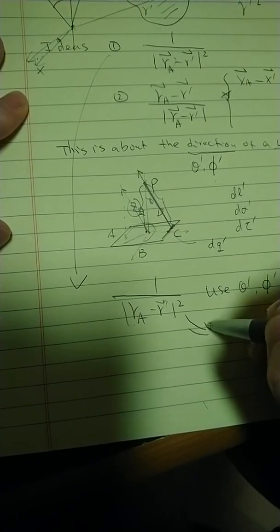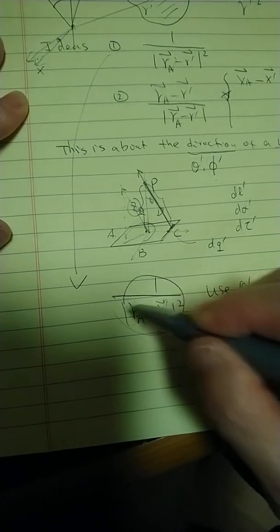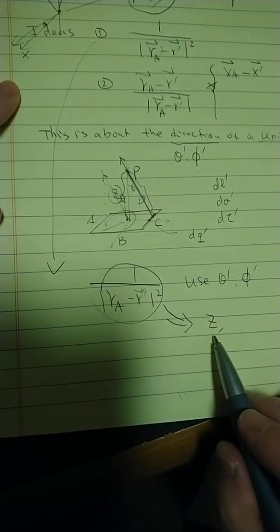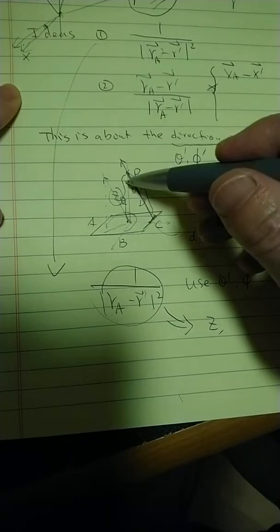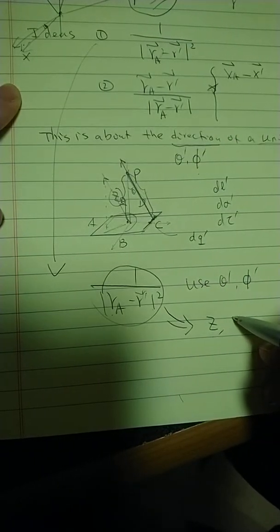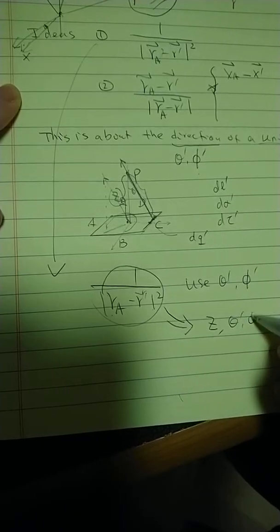So in other words, we want to make sure this particular part becomes a known function of z, which is given. This is fixed as a constant, never changes. And plus theta prime, phi prime.